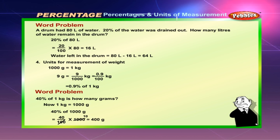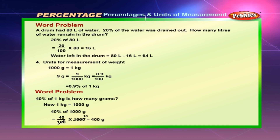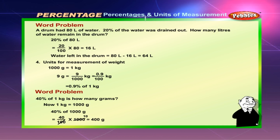Units for measurement of weight: 1000 grams = 1 kilogram. 9 grams = 9/1000 kg = 0.9/100 kg = 0.9% of 1 kilogram. Word problem: 40% of 1 kilogram is how many grams? Since 1 kg = 1000 grams, 40% of 1000 grams = 40/100 × 1000 = 400 grams.